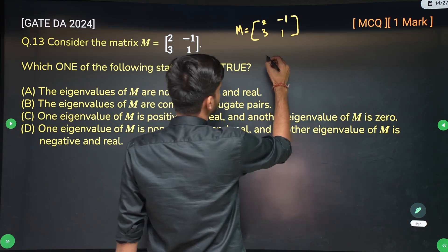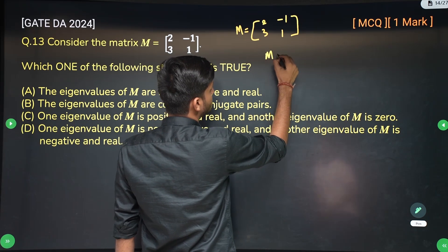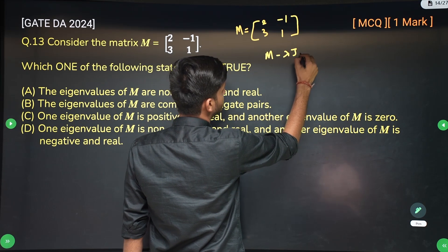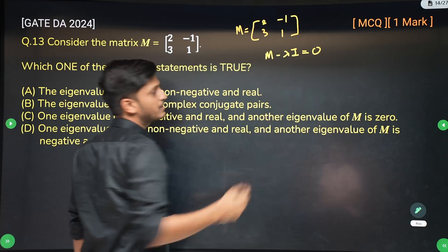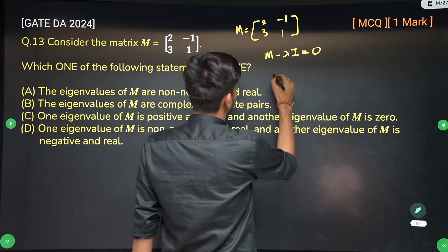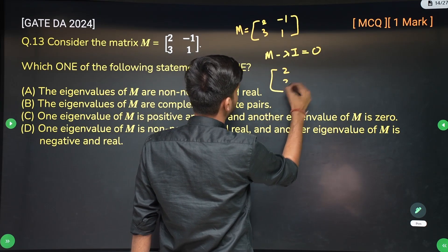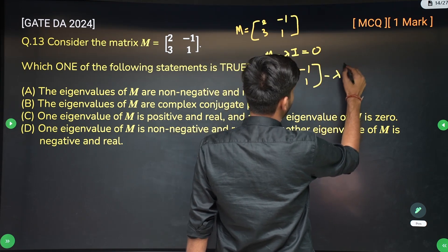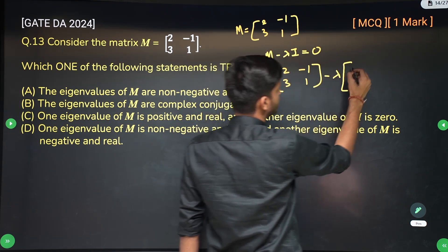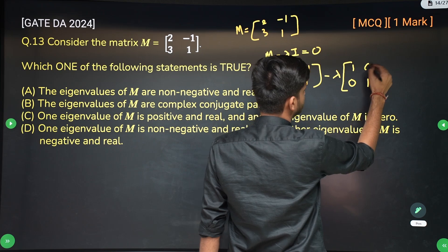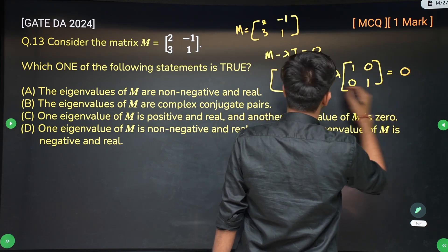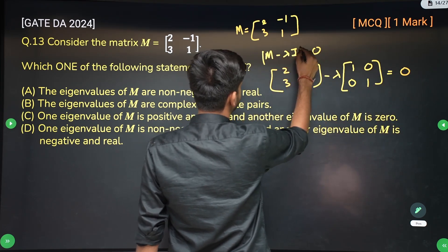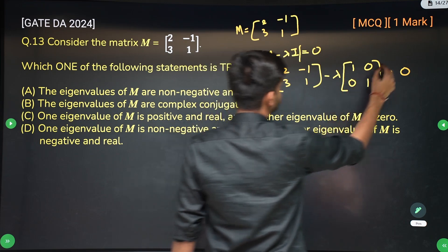So how to calculate eigenvalues? For any matrix M, we just write M minus lambda I equals 0 where lambda will be the eigenvalues. So basically M is 2, 3, minus 1, 1 minus lambda times I. I is an identity matrix of same size. So 1, 0, 0, 1. So the determinant of this entire thing is 0.